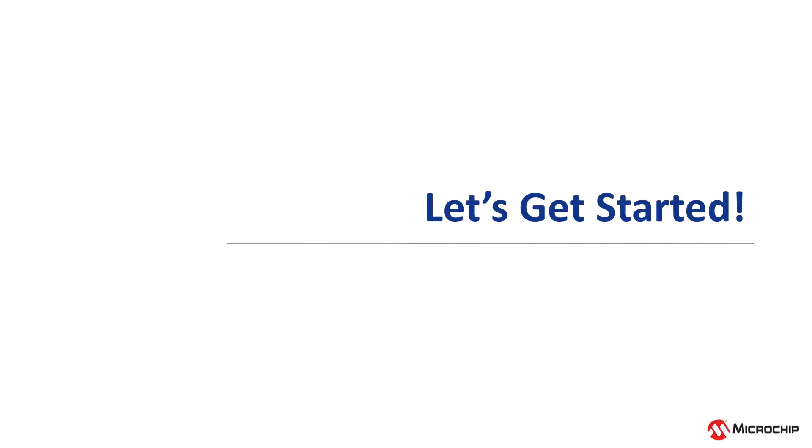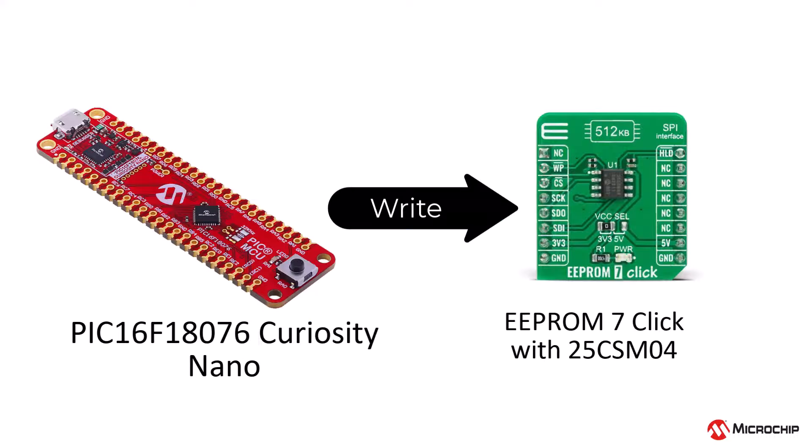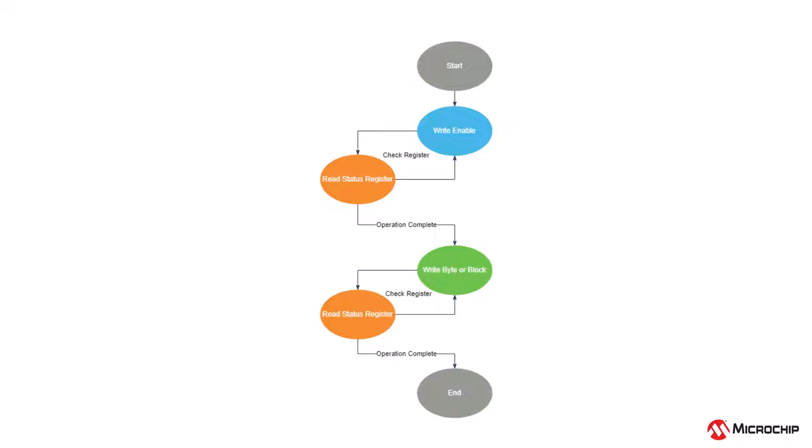Let's discuss what to expect for both executing a write and a read. When writing from your microcontroller to an external EEPROM, your first step after setting up your hardware and initializing all relevant peripherals is to send a write enable command. This will tell the EEPROM to prepare to do a write.